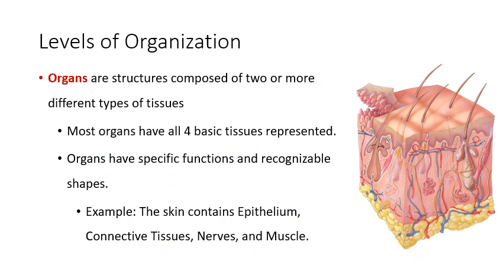Moving up the hierarchical scale, organs are built of usually all four different tissue types. Pretty much every organ in your body is composed of all four types. The example here is the organ of your skin. The top layer is epithelial tissue. The middle region is all connective tissue. We've also got some muscular tissue — the tiny little muscles in your skin attached to each hair. And then we've got some tactile receptors, which are nervous tissue — sensory nerves so you can feel sensation in the skin. So all four different tissue types are usually represented in every single organ.